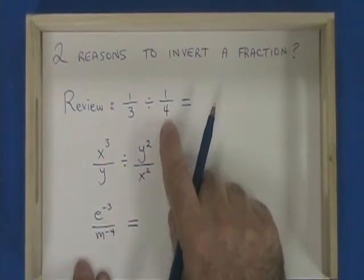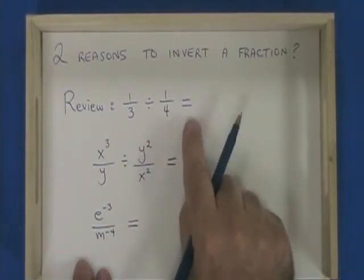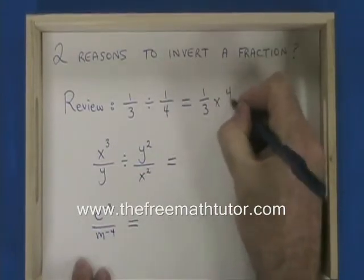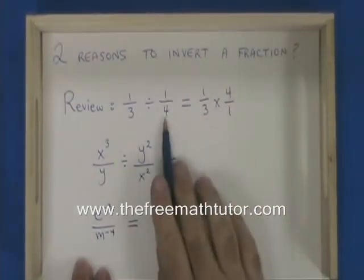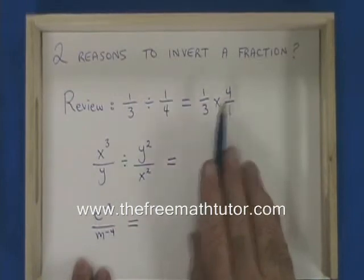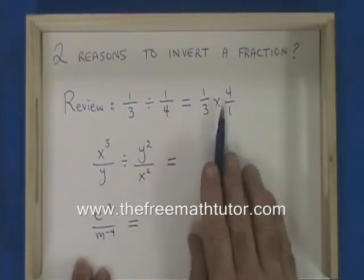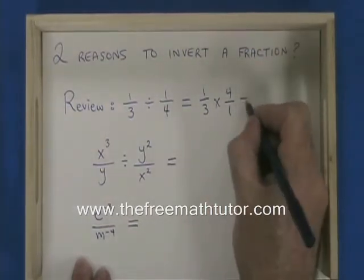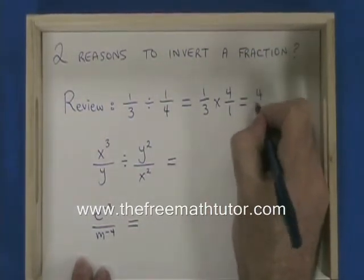As a review, 1 third divided by 1 quarter equals 1 third times 4 over 1. We turn the second fraction upside down, we invert it, and we change the division symbol to a multiplication symbol, and then we're able to give our answer, which is 4 thirds.